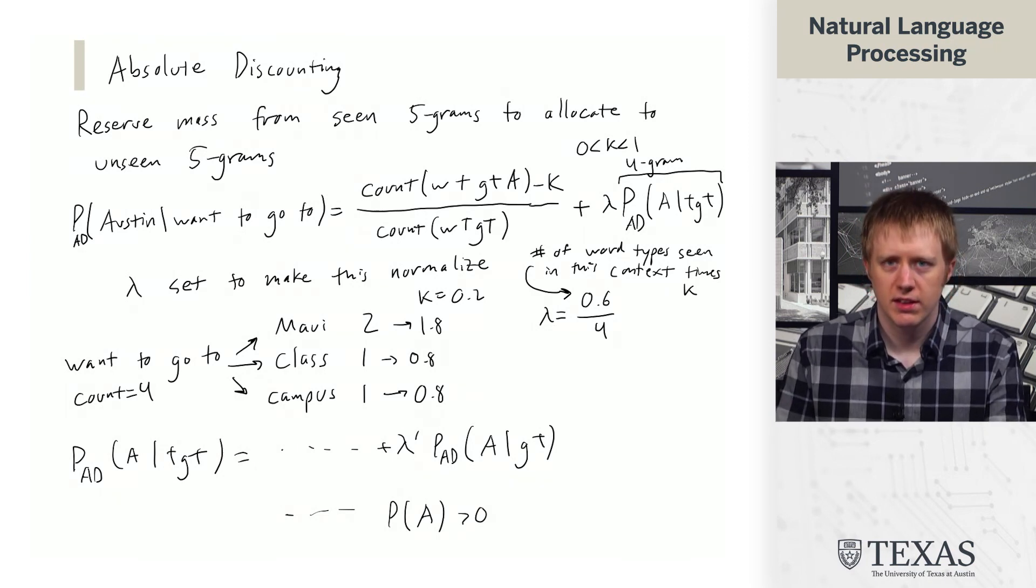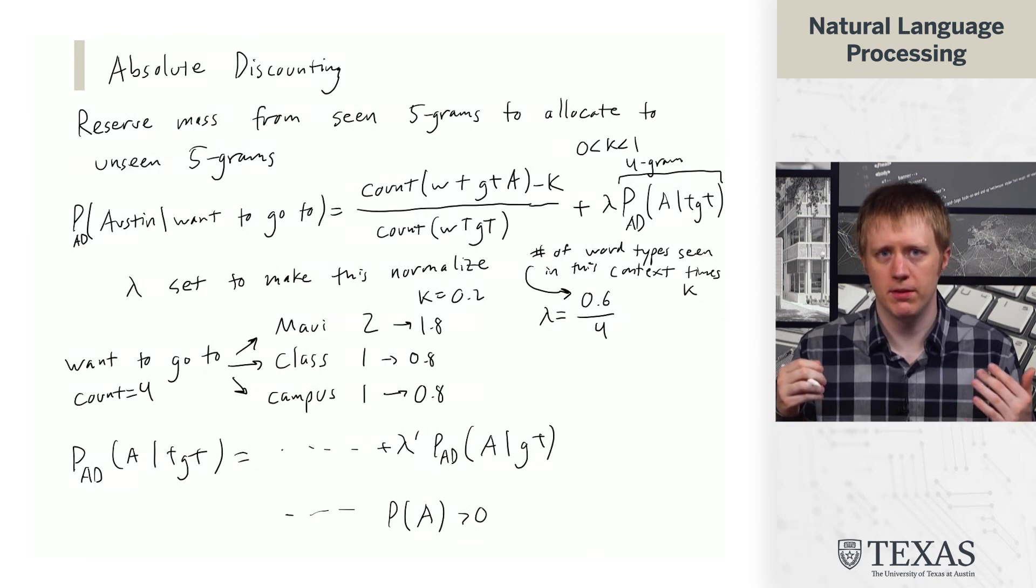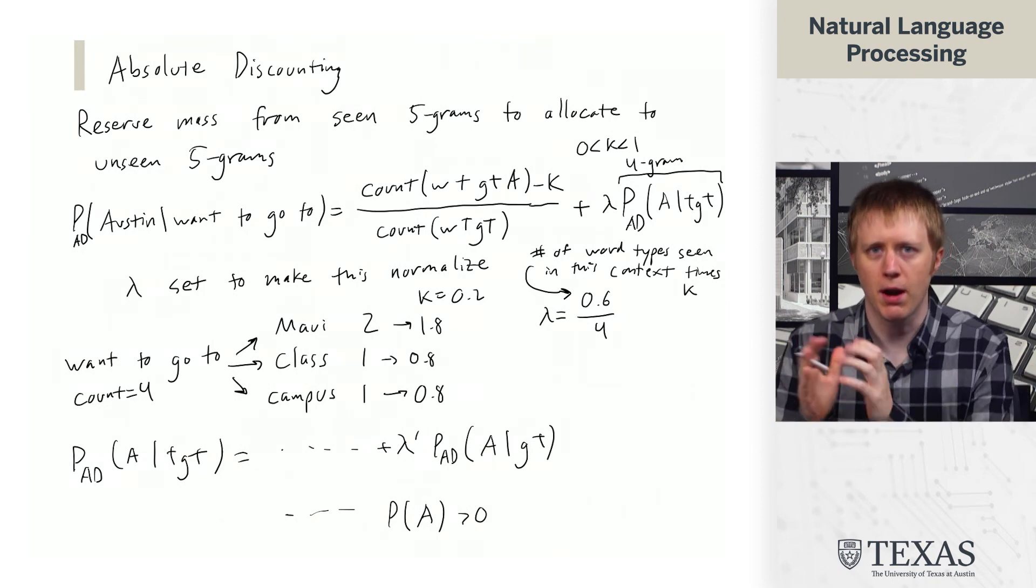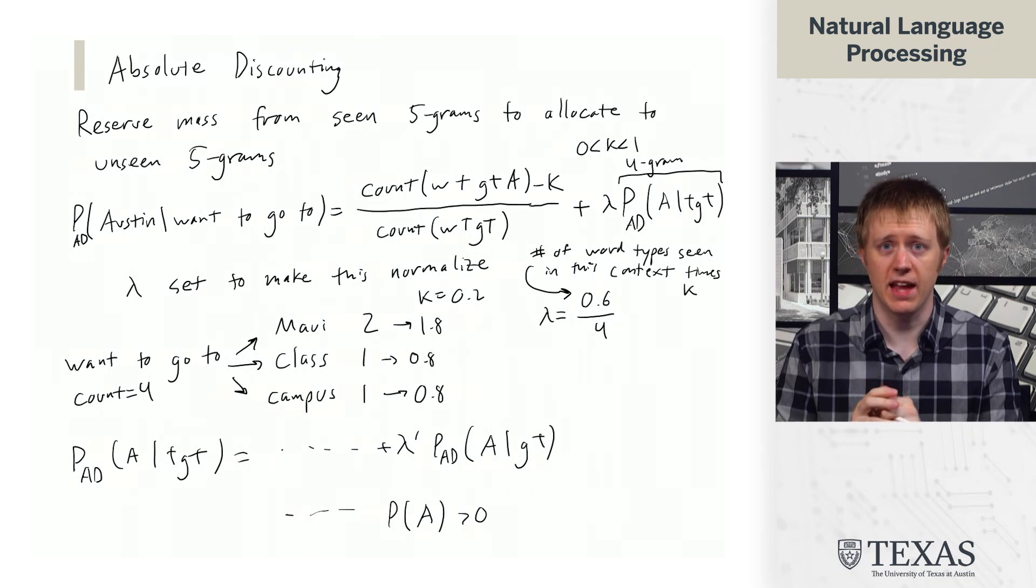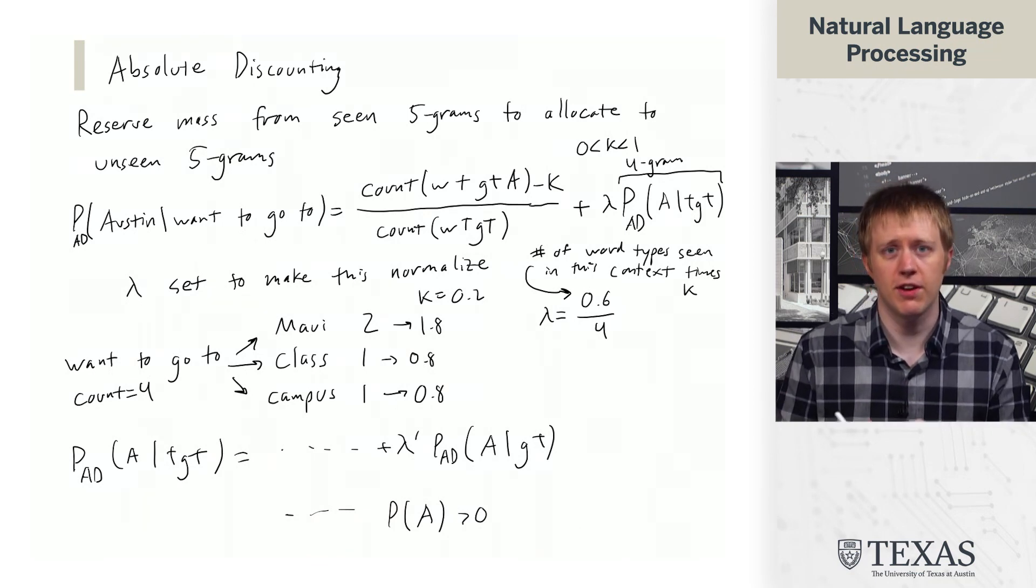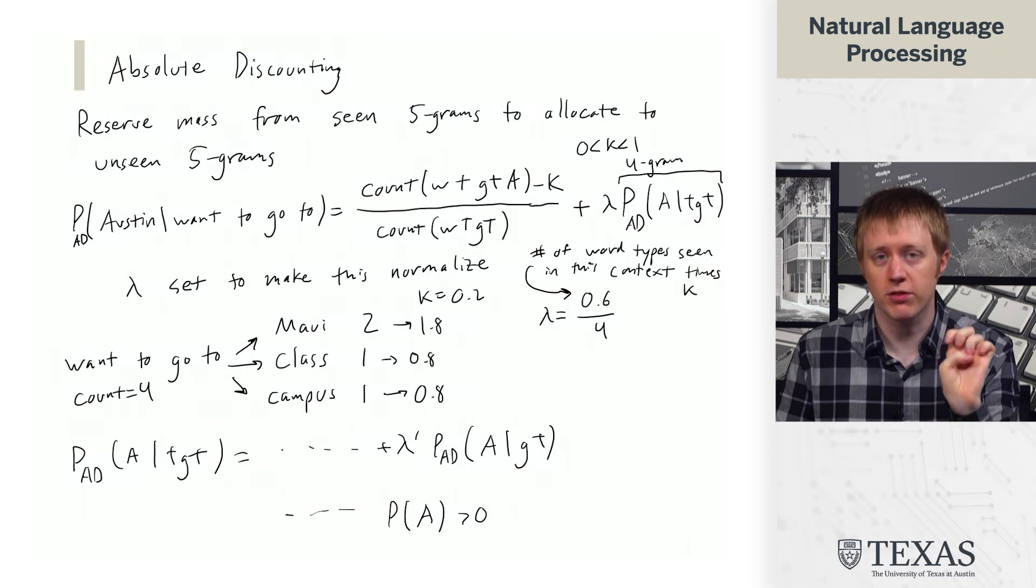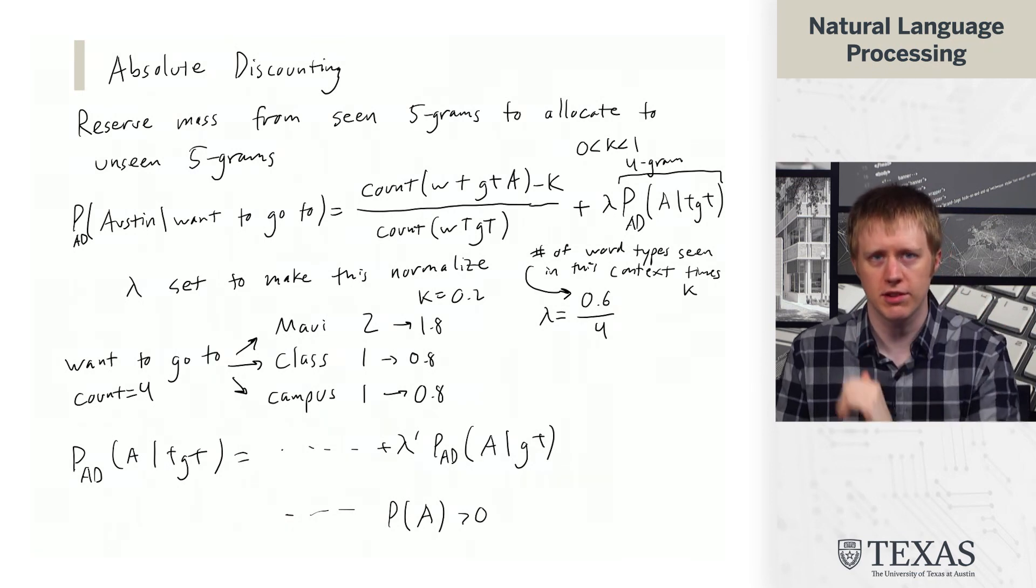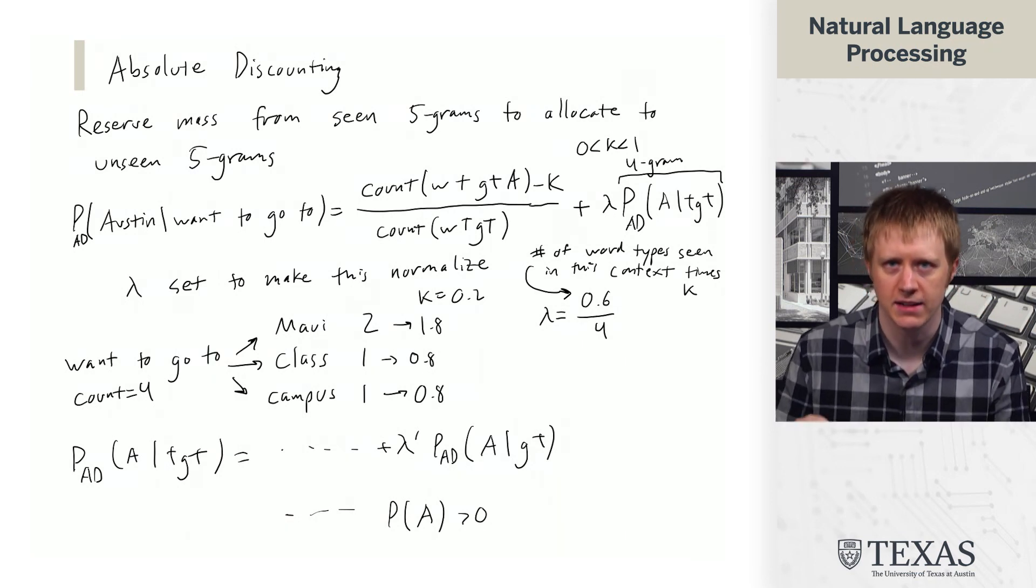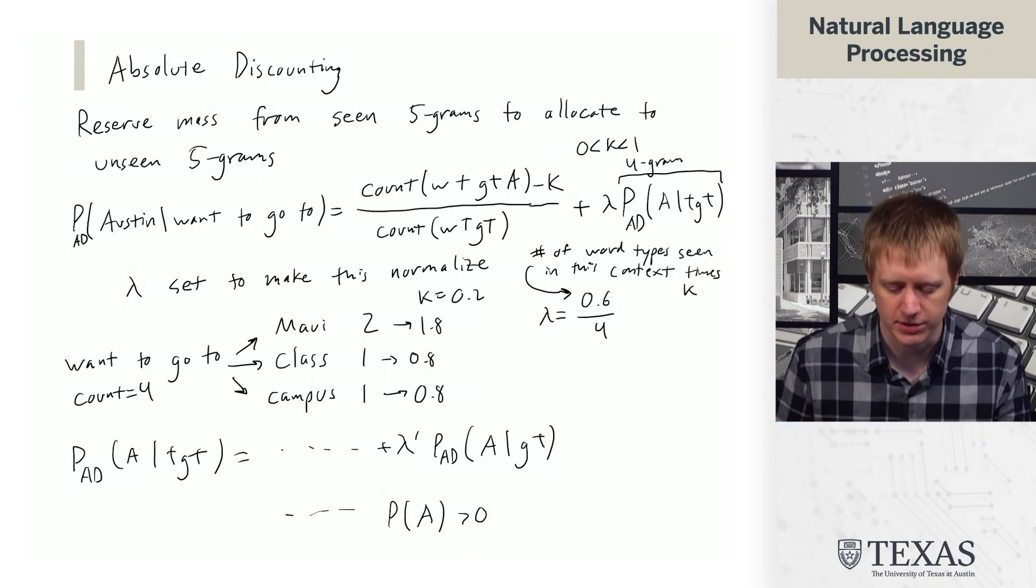So the key property of this is that it allows us to basically allocate some probability mass to unseen events. And it backs off in this very natural way where we first kind of say, okay, we're not just going to throw out all the information. We're going to successively decrease the amount of information that we're looking at and get a sort of accurate estimate as a result.